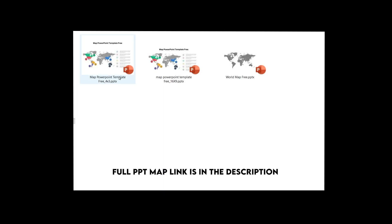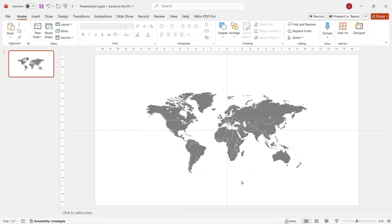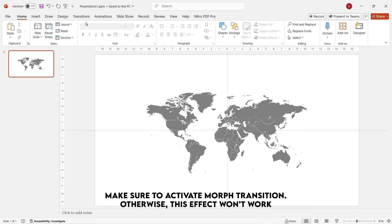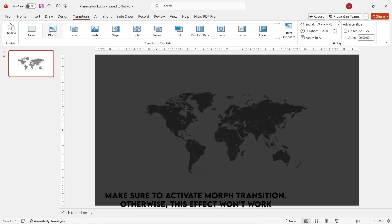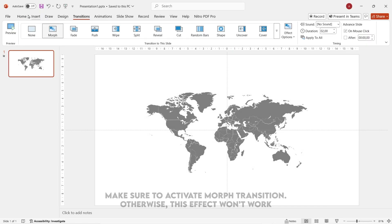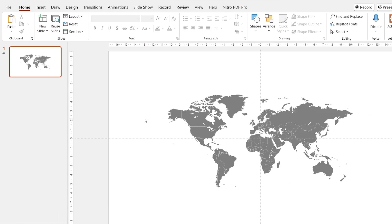First of all, we need the world map design. You can download this image from the link in the description. Make sure to put a Move transition on the first slide, because we're gonna have every slide here with that transition.